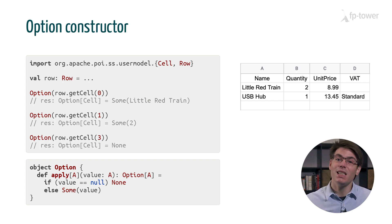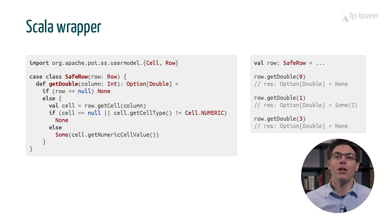However, it's still easy to forget to wrap every single Java method call with Option. A better approach is to create a wrapper for the Apache POI data model. Here I've defined a class SafeRow which wraps an Apache POI row. SafeRow is in charge of doing all the validations. It checks if the row and cell exist and whether it contains the correct data type. In other words, we encapsulate all the handling logic for null and exceptions within the class SafeRow and offer a functional API to the rest of the application.